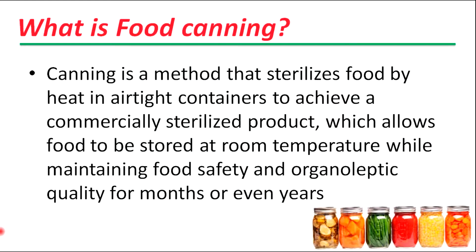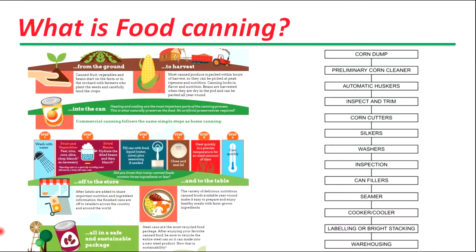Canning is a method that sterilizes food by heat in airtight containers to achieve a commercially sterilized product, which allows food to be stored at room temperature while maintaining food safety and organoleptic quality for months or even years. Canning processes food by heating food in a jar or a can and sealing with a vacuum that occurs when the container cools. Because there is no oxygen in the container, aerobic microorganisms cannot grow, but any anaerobic microbes that survive the heating process can grow in this environment.